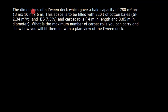Let's discuss this very interesting problem. The dimensions of a twin deck which gave a bale capacity of 780 cubic meters are given. The space has to be filled with cotton bales - the storage factor and broken storage are given - and also carpet rolls. The dimension of the carpet roll is 4 meters in length and 0.85 meters in diameter.